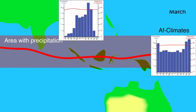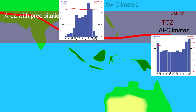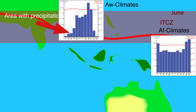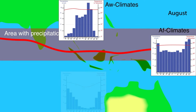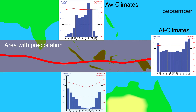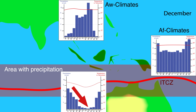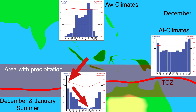North of the equator it rains in July and it's dry in December, which makes it an AW climate — warm and dry in the winter months. South of the equator it rains in December and it's dry in June. Because it is warm in December and January, this is called summer in the southern hemisphere.